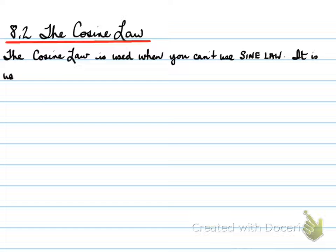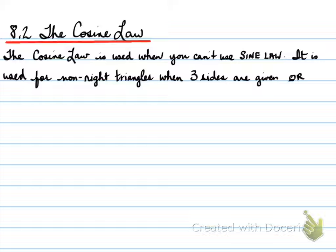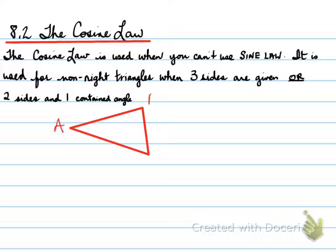Now to be able to use cosine law you need to use it for non-right triangles. When three sides are given or two sides and one contained angle are given.